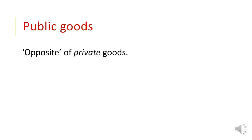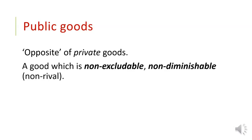Just to remind ourselves, public goods are, in a sense, the opposite of private goods. A private good is defined as a good which you can be excluded from enjoying the benefits of if you don't own it or don't have rights to it, and also that it diminishes as it is consumed. A public good, on the other hand, is a good which is non-excludable and non-diminishable, or also called non-rival.